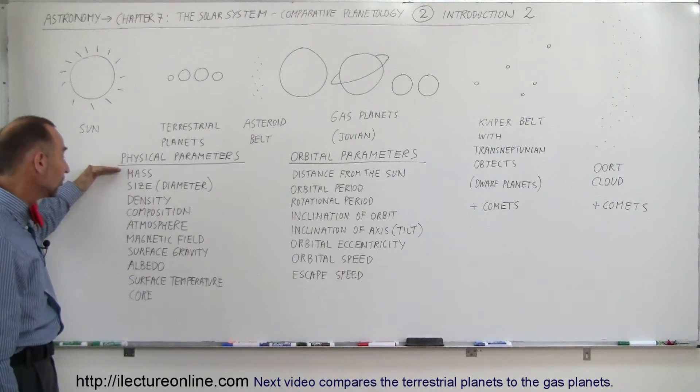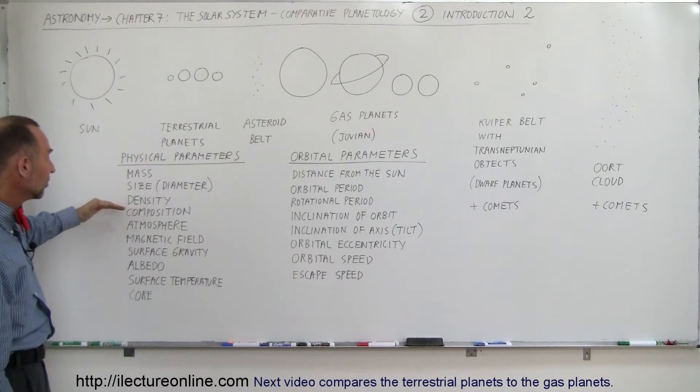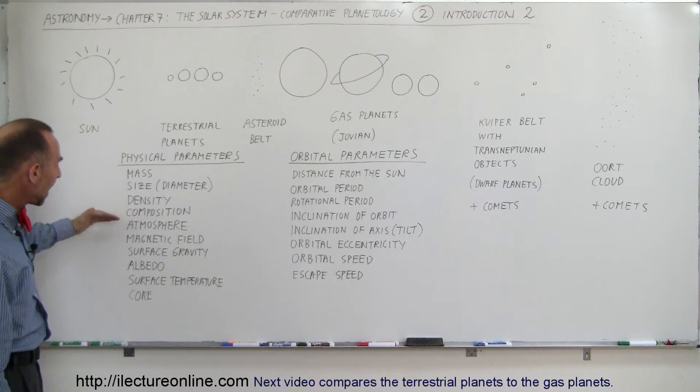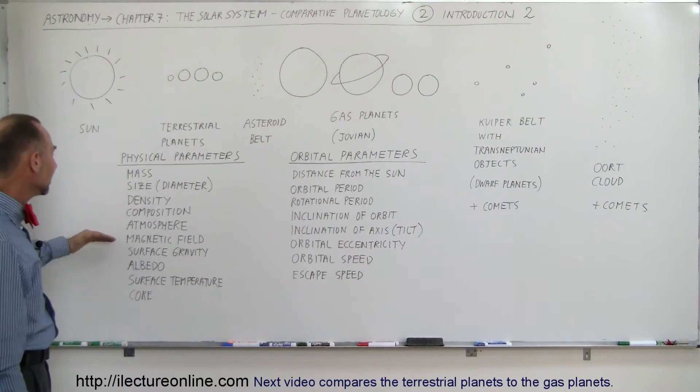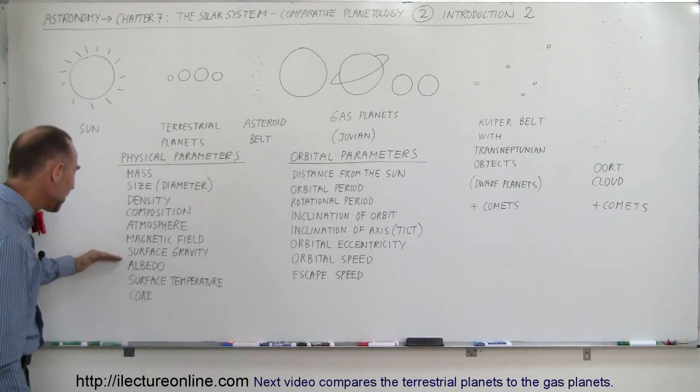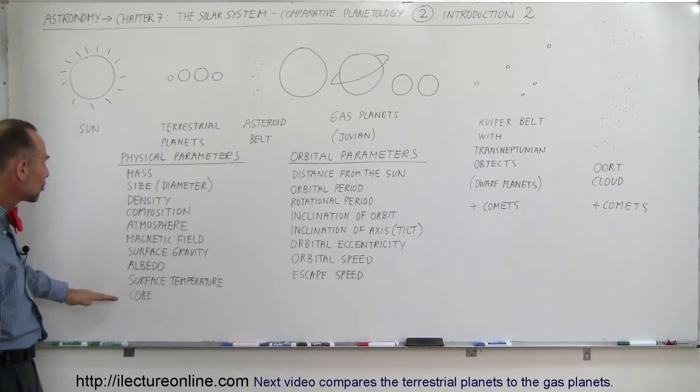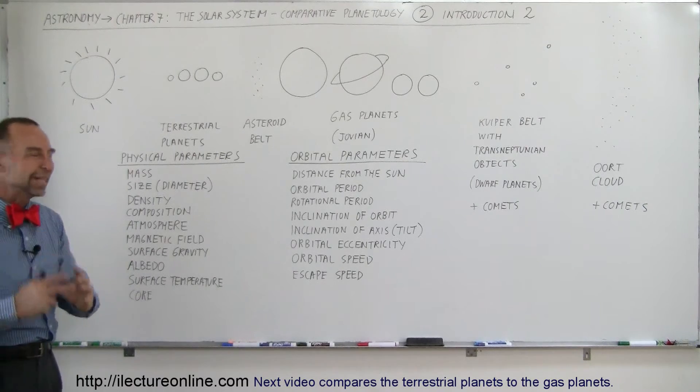Among the physical parameters we have the mass of the planet, the size and diameter, the density, composition, atmosphere, magnetic field, surface gravity, albedo, surface temperature and what's in the core inside of the planets.